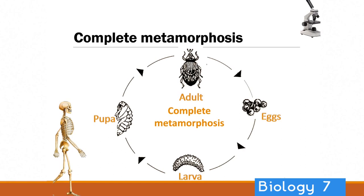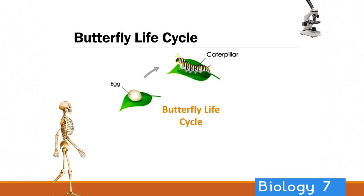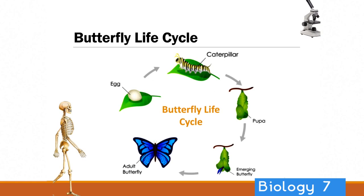Let's have a look at the butterfly life cycle. It lays eggs on a leaf, which form a caterpillar. The caterpillar forms a cocoon and forms the pupa, which then eventually turns into a lovely butterfly, which will then go and lay eggs again.